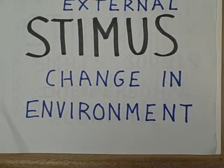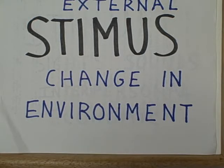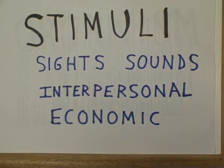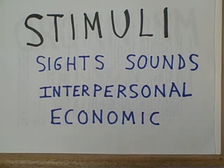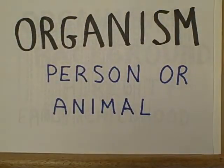Let's start with those external stimuli — one stimulus or several stimuli. What we are talking about is a change in the environment of the organism. Specifically, some kind of change in the energy level, such as more light, more sound, more vibration — some change in the energy level that the organism can perceive. Stimuli would therefore include sights, sounds, smells, vibrations, but also interpersonal activities, even economic changes like earning more money. All of these could stimulate us to respond in different ways.